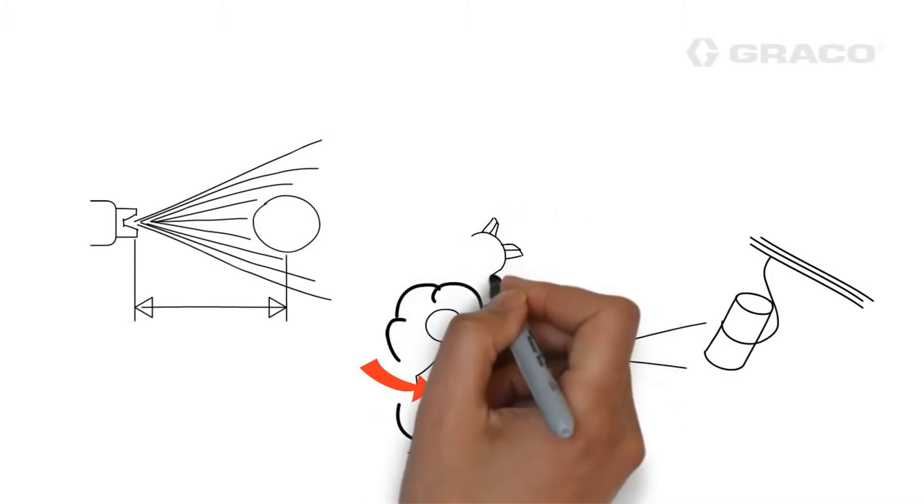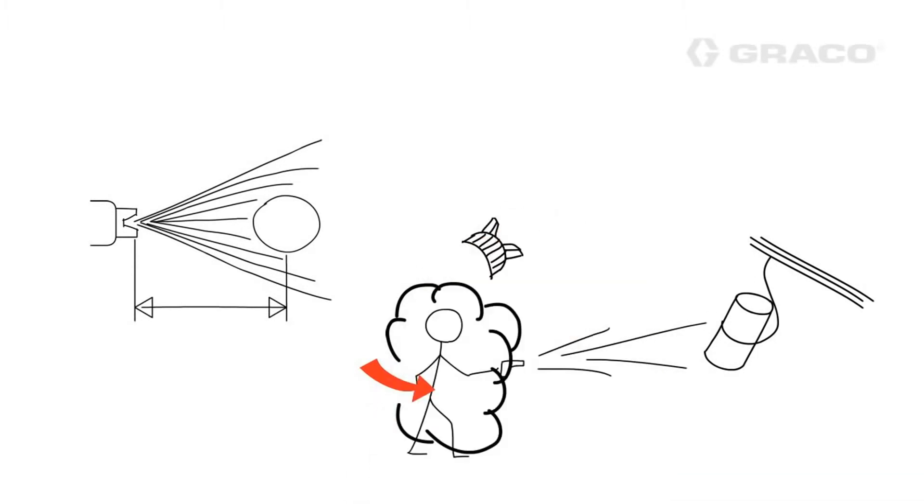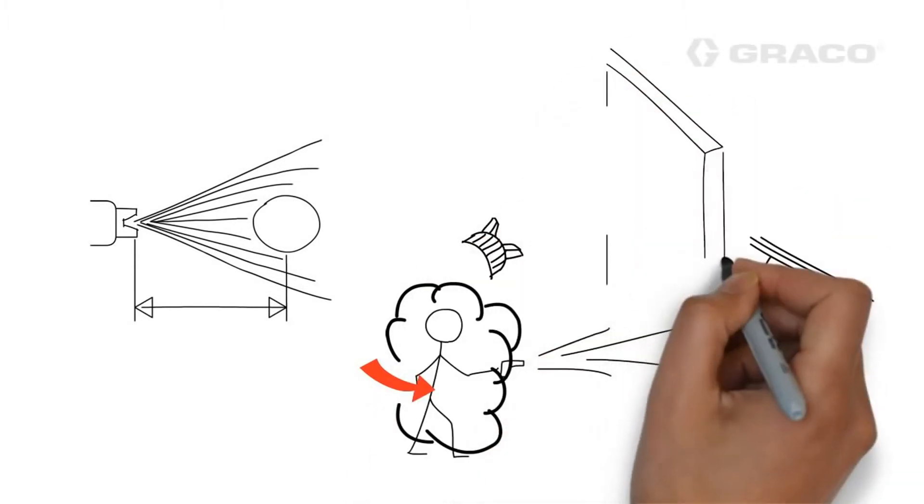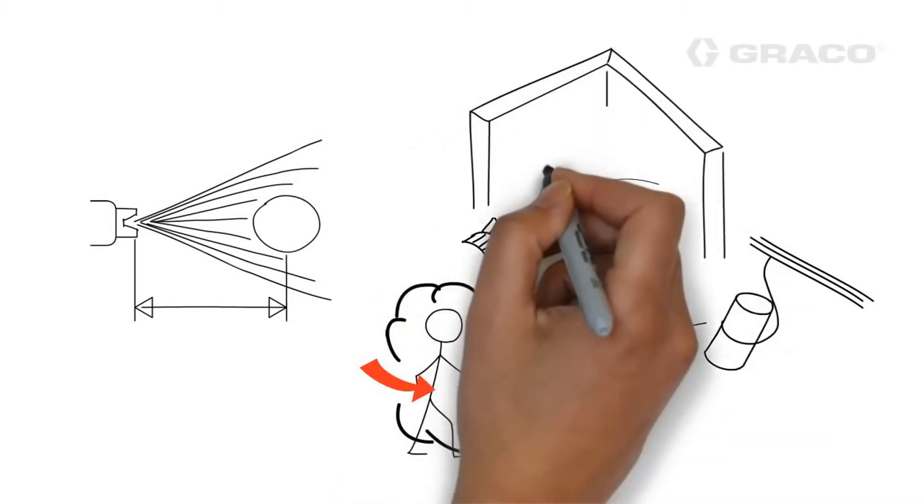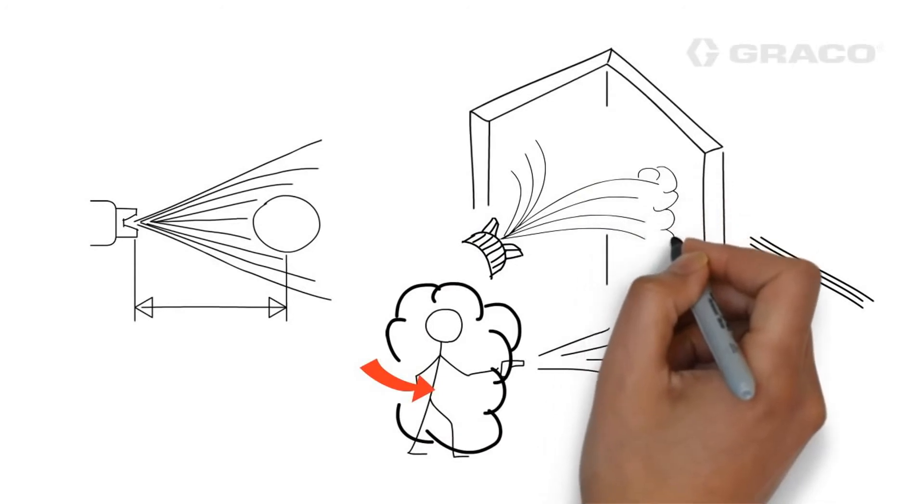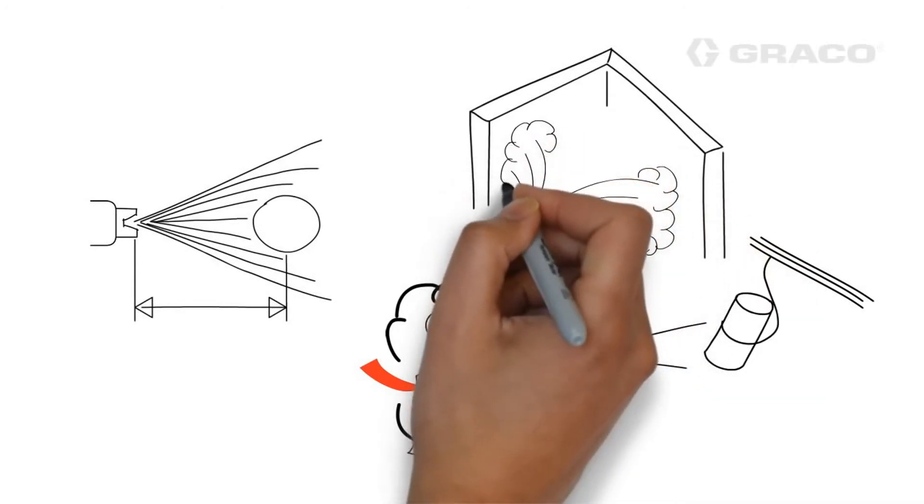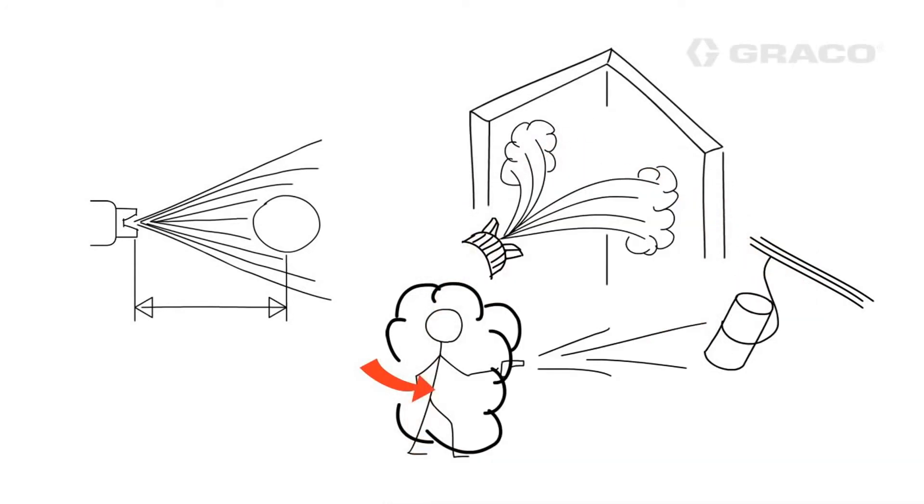Third, when trying to paint into corners with electrostatic guns, there is a tendency for the paint to go to the closest ground, which generally does not include deep into the corner. This is known as the Faraday cage effect. When painting into corners with electrostatic guns, it's nice to have the ability to easily reduce or remove the voltage from the gun until this part of the painting process has been completed.